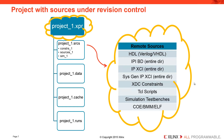This is a high-level overview of what the project would look like under revision control. The things in the gold clouds are the things that are checked into revision control. We have our project, our XPR file — we would manage that with the revision control system. And then all of the remote sources: the VHDL, Verilog, block diagrams, XCIs, constraints, etc.